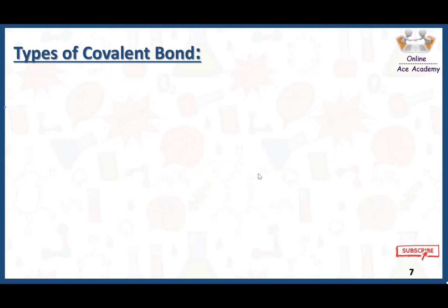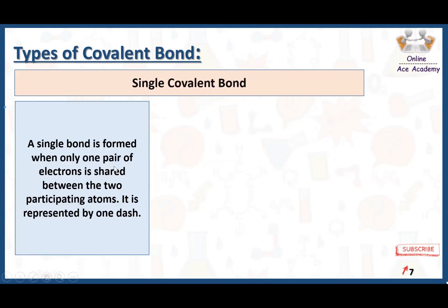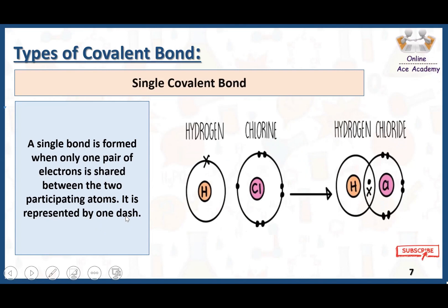There are three types of covalent bond. The first one is the single covalent bond. A single bond is formed when only one pair of electrons is shared between the two participating atoms. It is represented by one dash. For example, we have two hydrogen atoms — each has one electron in its outermost shell. They share their one electron and make a bond, represented with one dash. This is what a single covalent bond is.